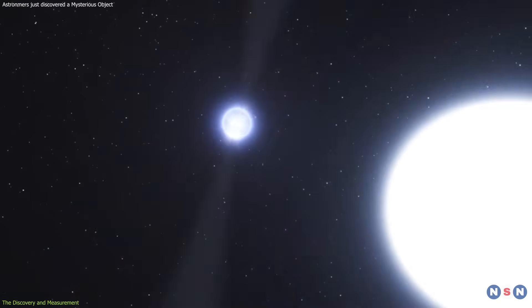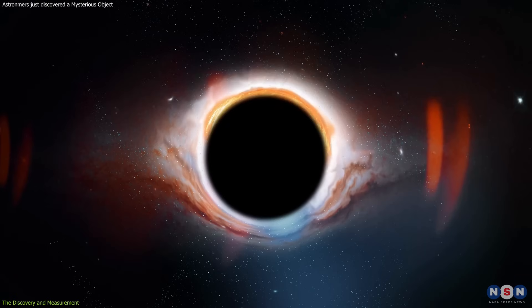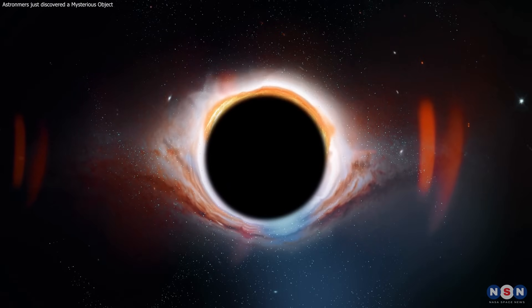So, what is the companion object of the pulsar? Is it a very heavy neutron star or a very light black hole? And how can we tell the difference?